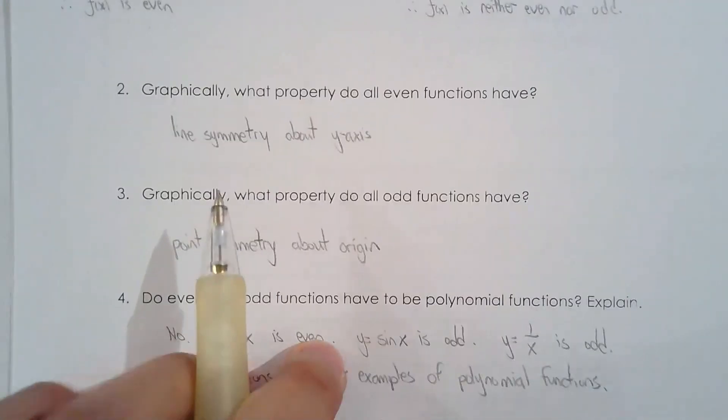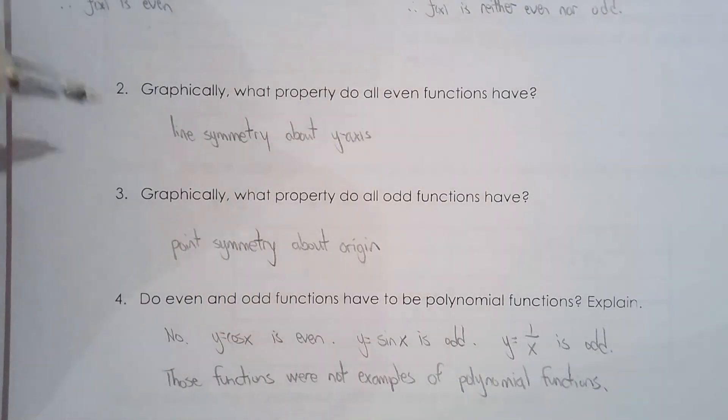Question 2 and 3 is pretty straightforward. Even functions have line symmetry about the y-axis, and odd functions have point symmetry about the origin.